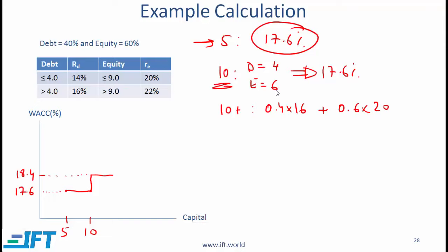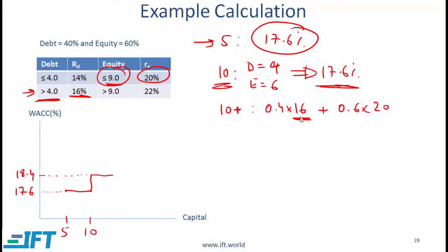When the company raises $10 million, debt is $4 million and equity is $6 million. Notice that $4 million is right at the edge of the threshold, so the cost of debt is still 14%. Equity of $6 million is still less than the $9 million threshold, so the WACC is still 17.6%. But if the company raises just a little more than $10 million, we will be borrowing more than $4 million, so the cost of debt jumps to 16%. Equity is still less than $9 million, so cost of equity stays at 20%. The new WACC becomes 0.4 × 16 + 0.6 × 20 = 18.4%.